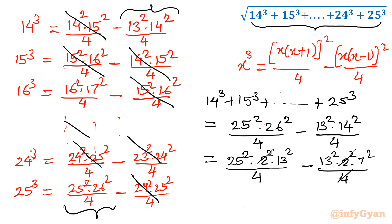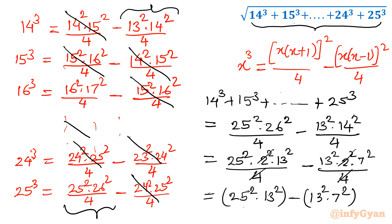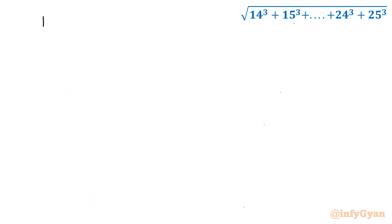The 4s cancel. Now you can see we have 25² times 13² minus 13² times 7². I will take 13² as a common factor. What is left is 25² minus 7².